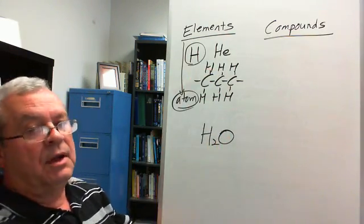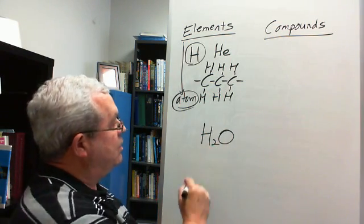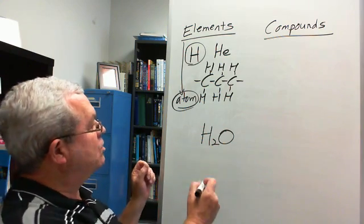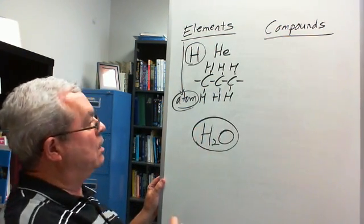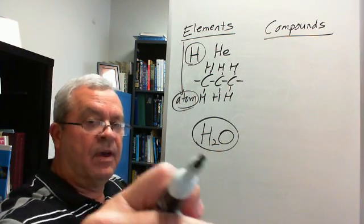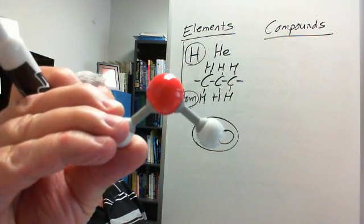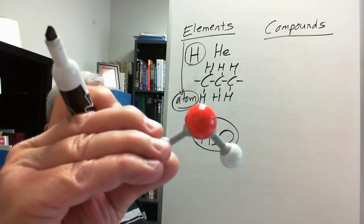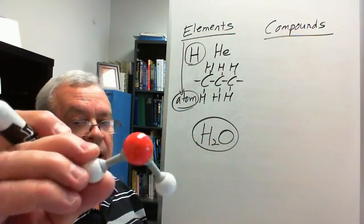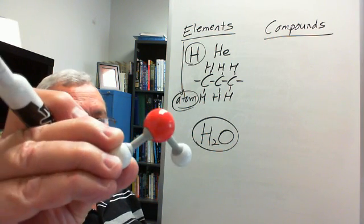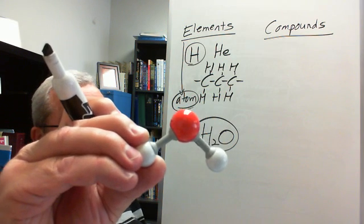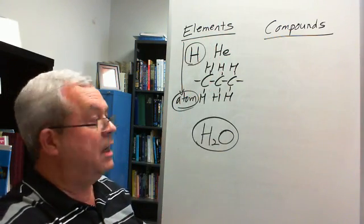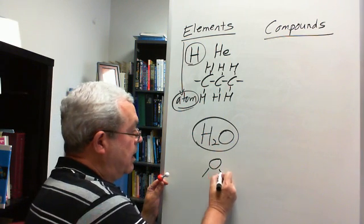H₂O is not an element; it's a compound. H and O are symbols of elements — H for hydrogen, O for oxygen. This formula represents the smallest particle of H₂O. Looking at the ball-and-stick model, it has three atoms joined together. Two are one color and one is another color, representing different elements.